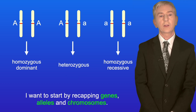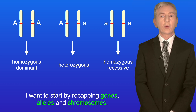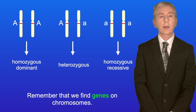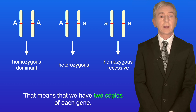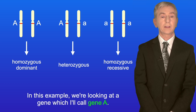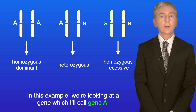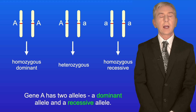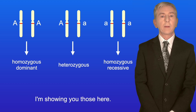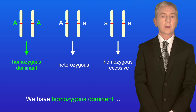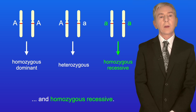I want to start by recapping genes, alleles and chromosomes. Remember that we find genes on chromosomes, and human cells contain two copies of each chromosome, so that means that we have two copies of each gene. In this example we're looking at a gene which I'll call gene A. Gene A has two alleles: a dominant allele and a recessive allele. So there are three possible genotypes for gene A, and I'm showing you those here: homozygous dominant, heterozygous, and homozygous recessive.